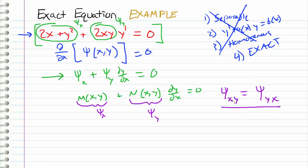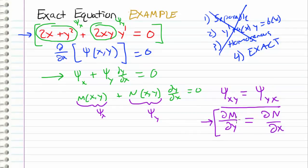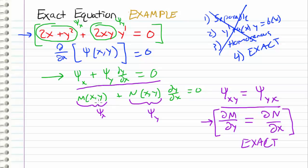This is the criteria we check in order to determine whether the equation is exact. Since M is psi sub x, if we differentiate M with respect to y, we get psi sub xy. This has to equal the partial derivative of N with respect to x, where N is psi sub y, giving us psi sub yx. So if M differentiated with respect to y equals N differentiated with respect to x, we refer to this equation as exact — our assumption that M and N are partial derivatives of an unknown function psi is verified, and we can solve it.